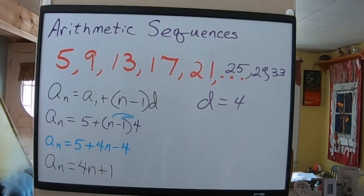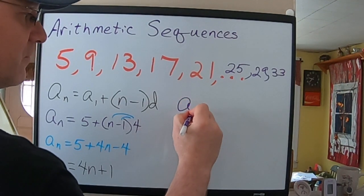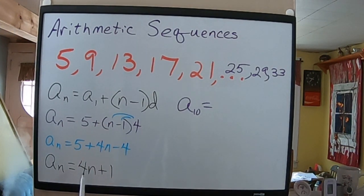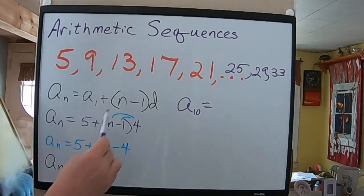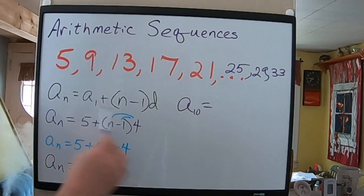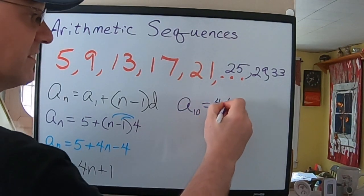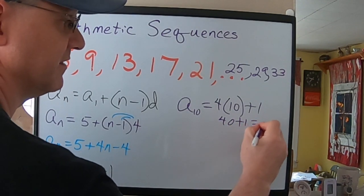So, if I wanted to find a particular term, I could keep doing this, and that's not a problem. But, it'd be a little easier for me, if I were trying to find, for example, the 10th term, I'm going to put 10 in for N. Now, I'm going to do it here, since I've already simplified it, but if you didn't have a simplified version, you could plug it in here with these two values, and just do the simplification and be done. But, since I have 4N plus 1, 4 times 10 plus 1, 40 plus 1 is 41.